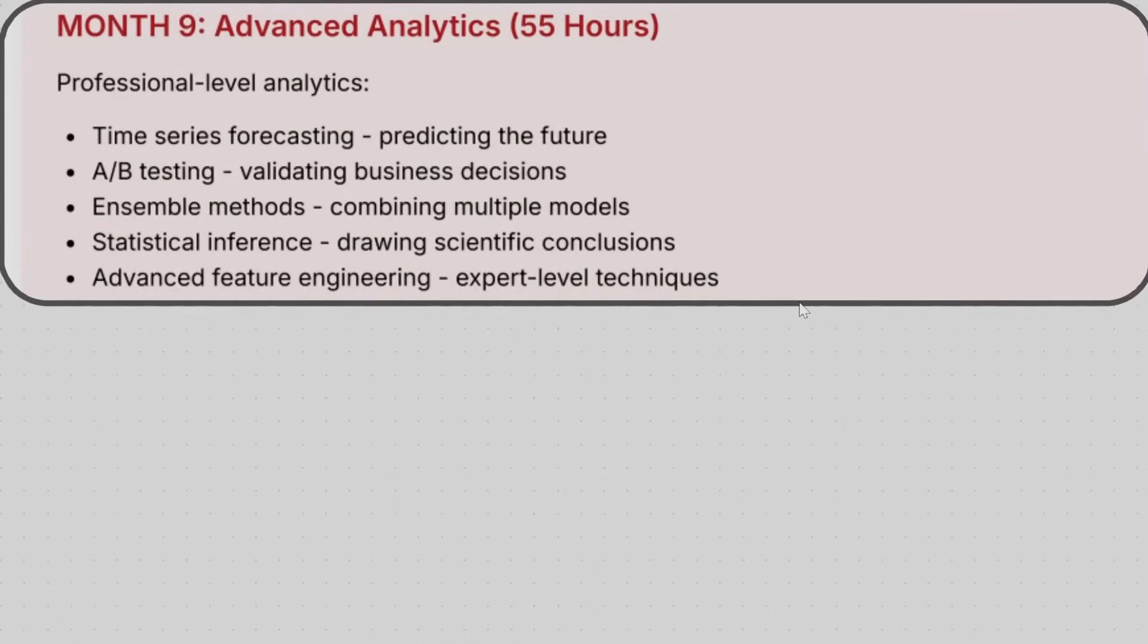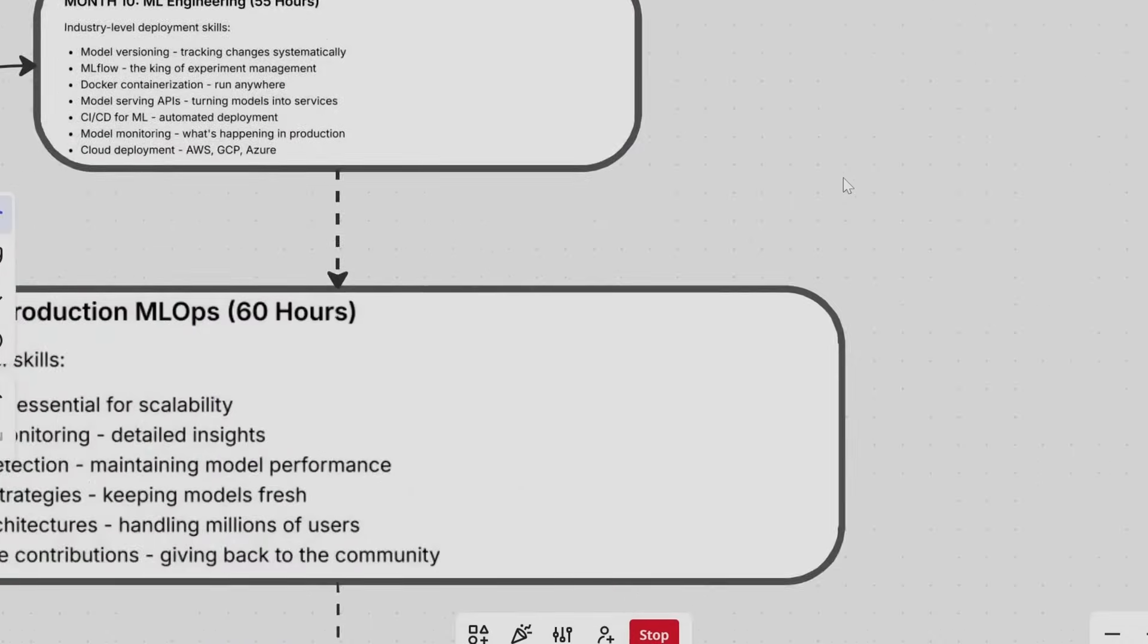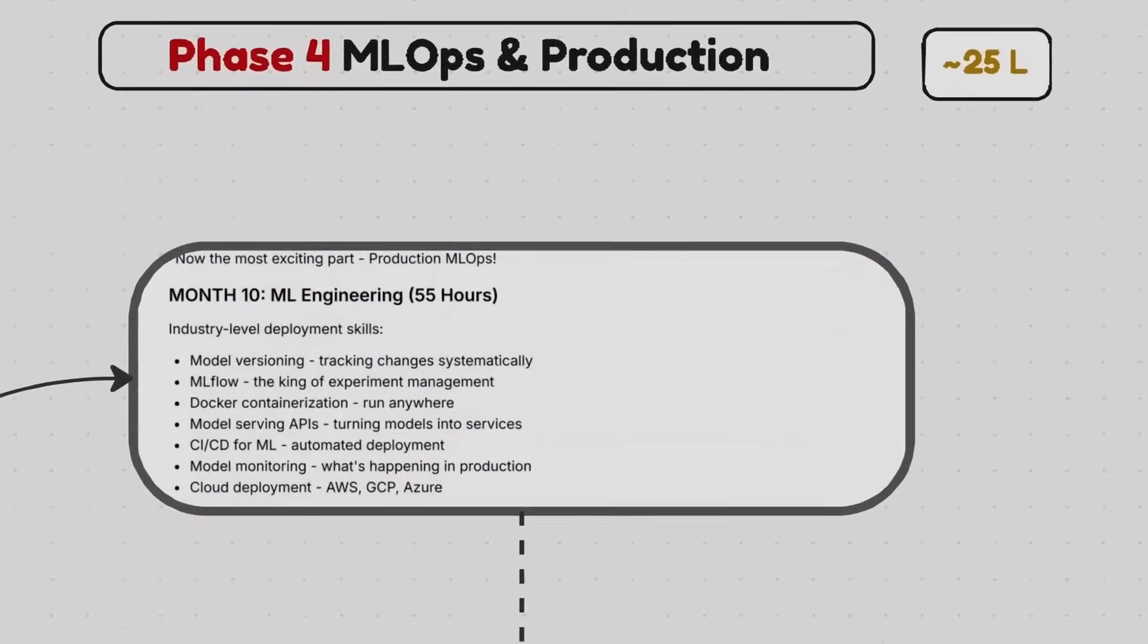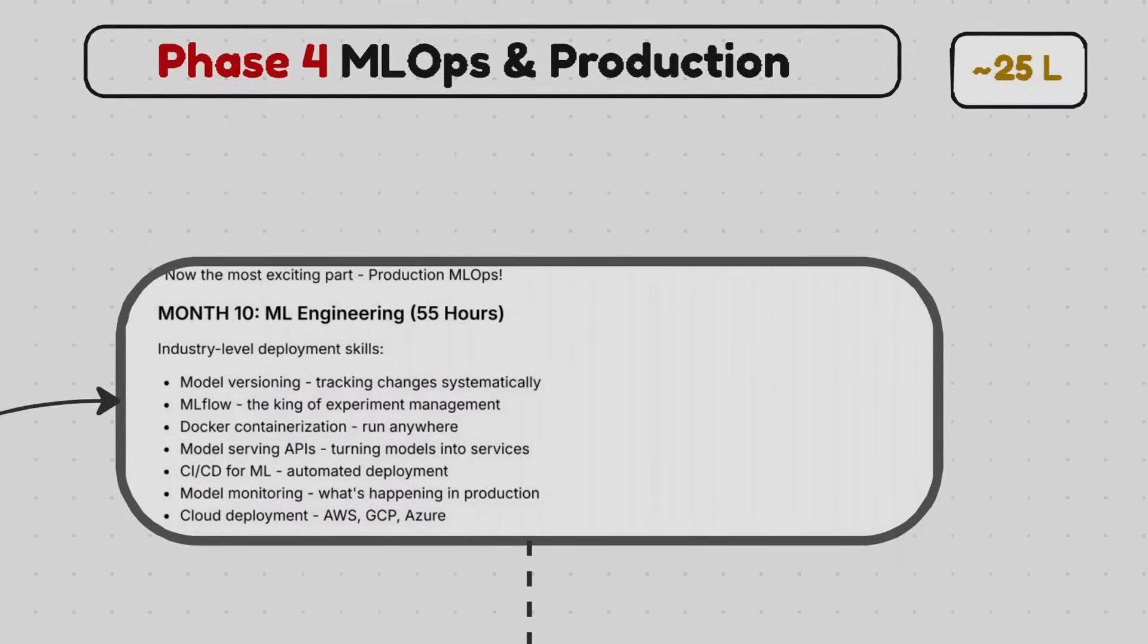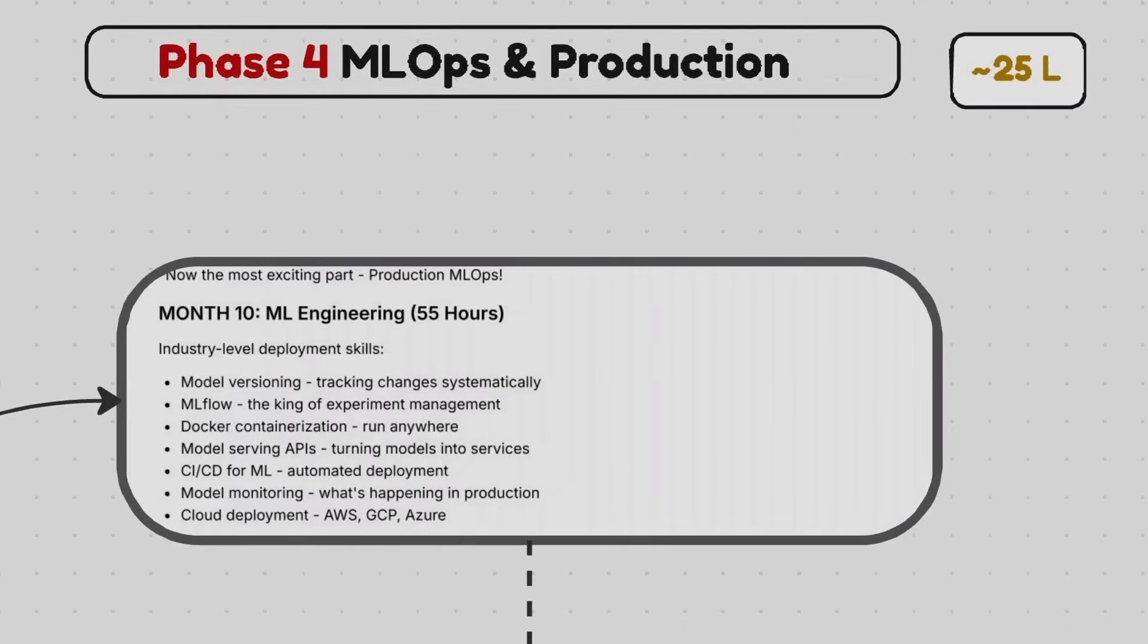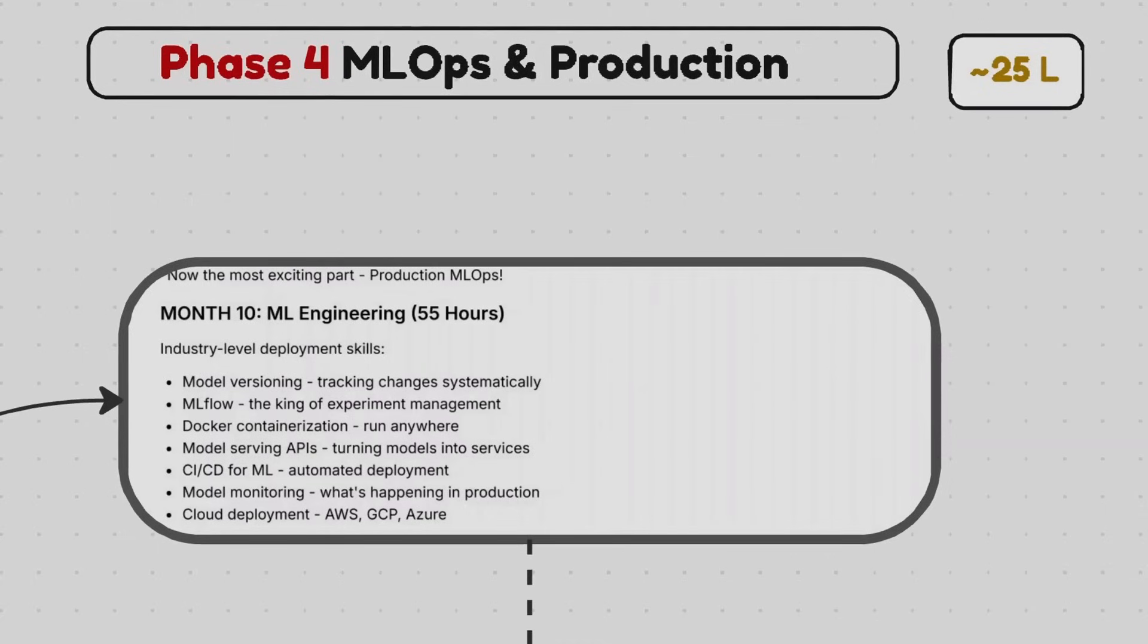Now coming to phase 4, which is machine learning operations and production. This is now the most exciting part, how you can manage entire production-level things. In the seventh to ninth month maybe, we will start machine learning engineering. We will talk about each and everything about how we can deploy our models. Model deployment is not a normal student's cup of cake, but definitely we'll see everything. We'll talk about model versioning, tracking changes systematically, MLflow, and Docker containerization. Already we have seen Kubernetes and Docker. Thereafter CI/CD for machine learning, automated deployment, model monitoring, and cloud deployment like AWS, GCP, and Azure.